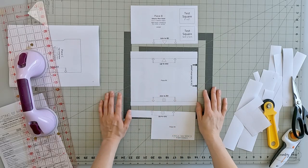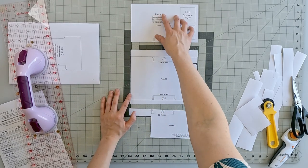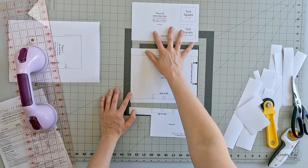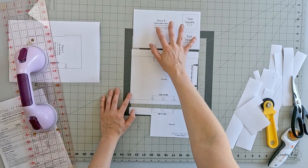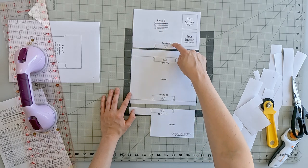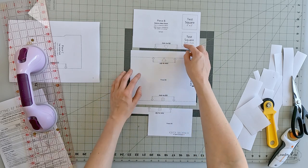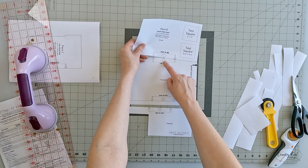Where a pattern piece is too large for one piece of paper, you will have separate pieces. This one will say B1 and it will say join to B2. This is B2 and it joins to B1. You can see that the symbols match.